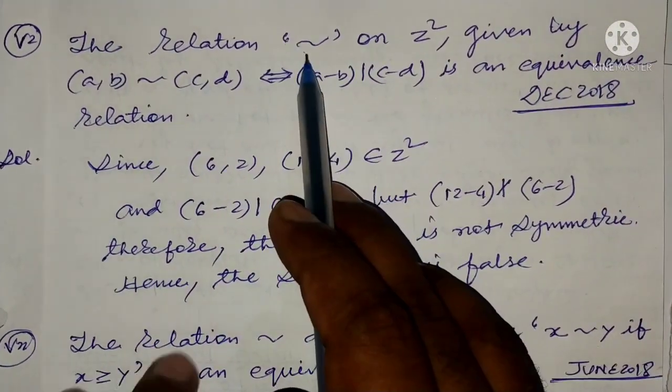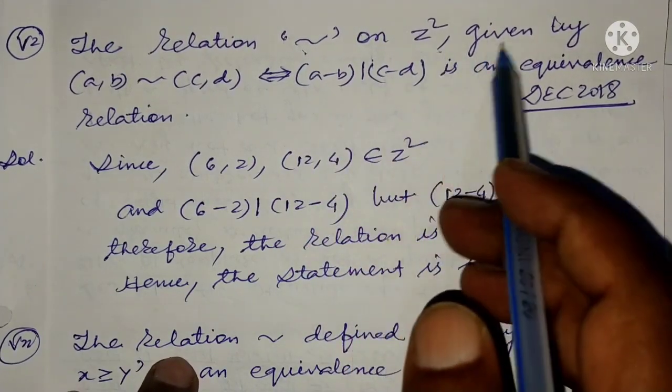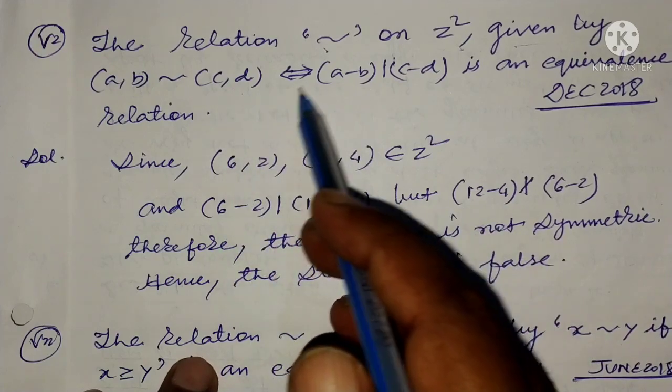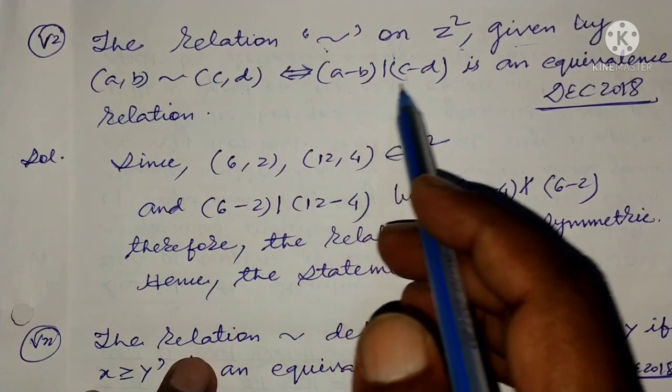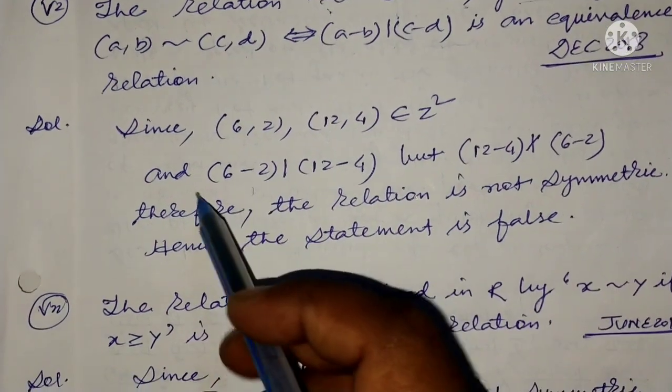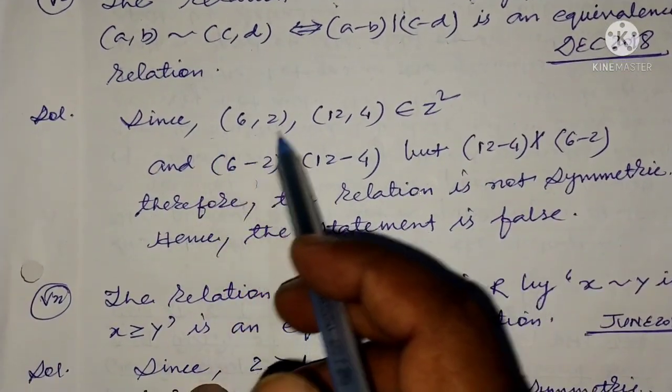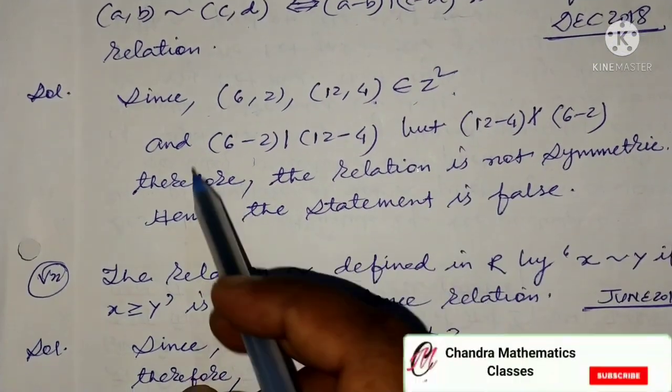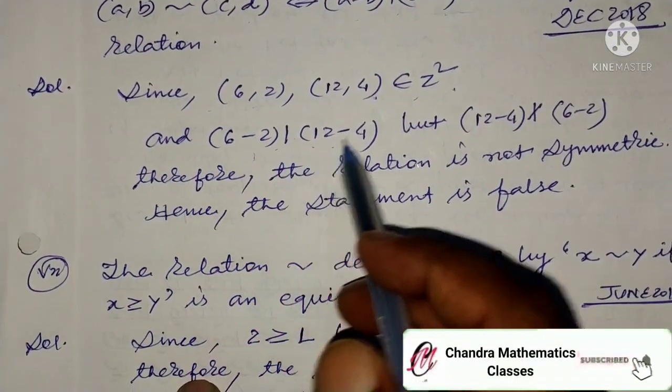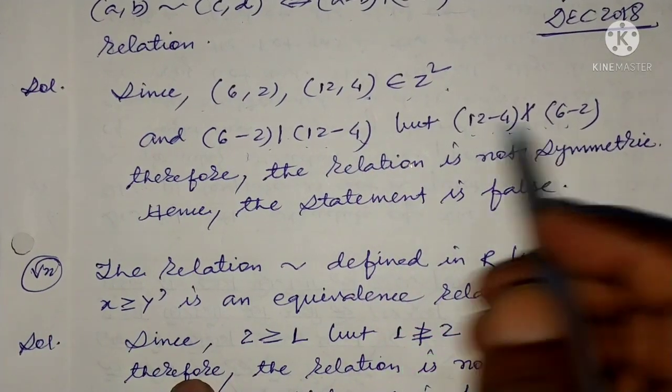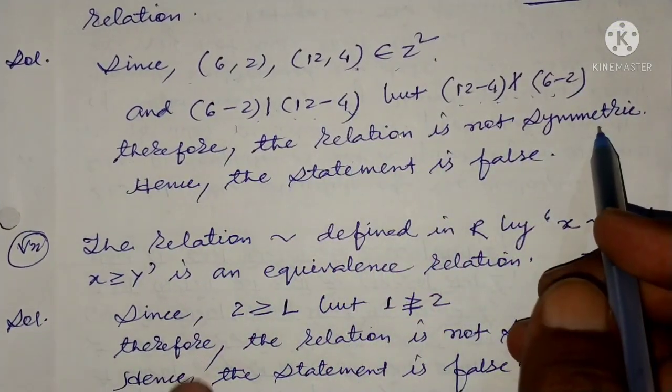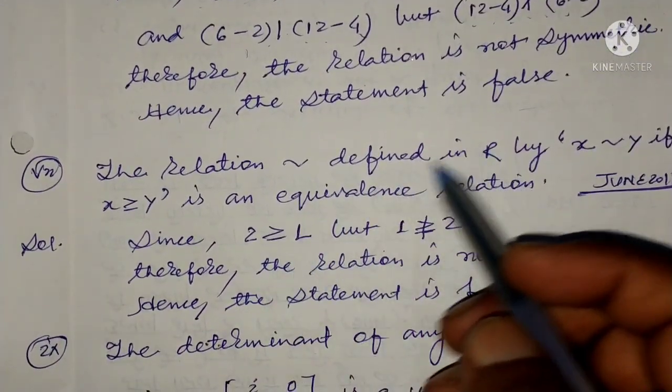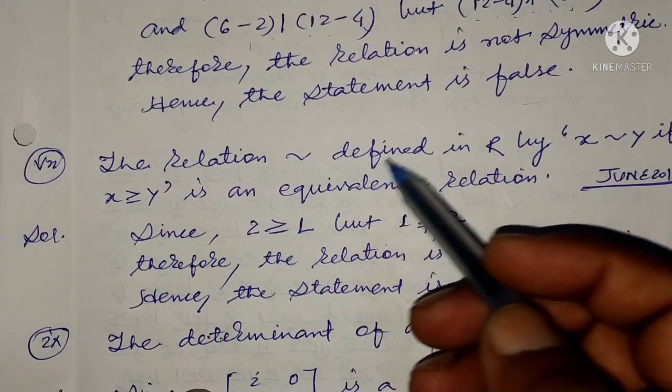The relation equivalent on Z² given by (a,b) ~ (c,d) if and only if (a - b) divides (c - d) is an equivalence relation. Since (6,2) and (12,4) belong to Z², and (6-2) divides (12-4), but (12-4) does not divide (6-2), therefore the relation is not symmetric and the statement is false.